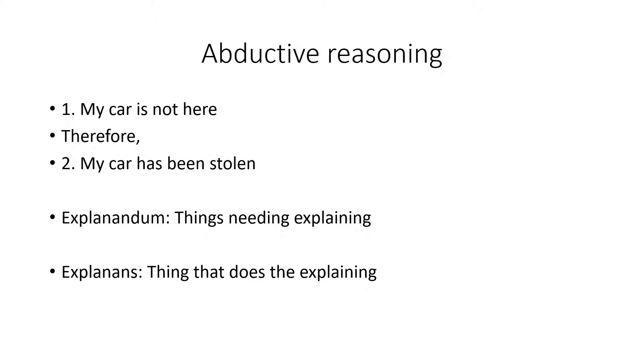So this abductive reasoning is we're trying to explain something. We're considering the fact that my car is not here, I've gone to go get my car and I've noticed it's not here, and this needs an explanation. And so our conclusion works as the explanation that my car has been stolen.